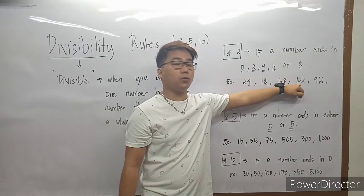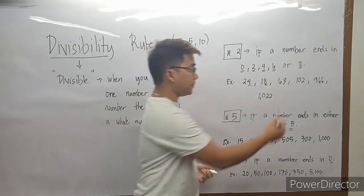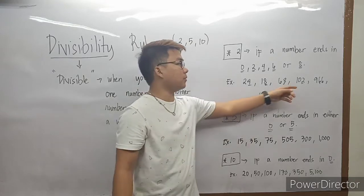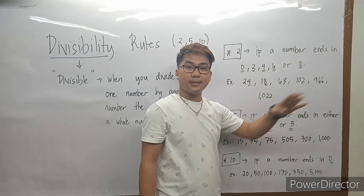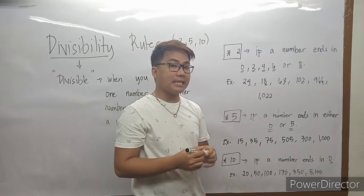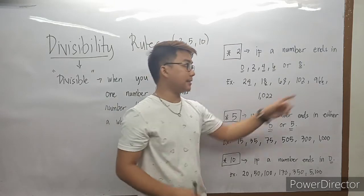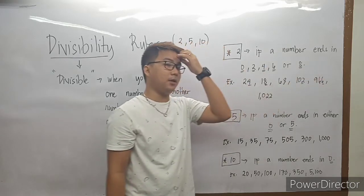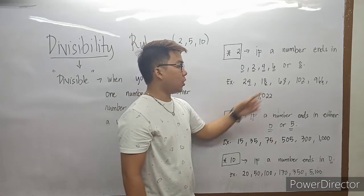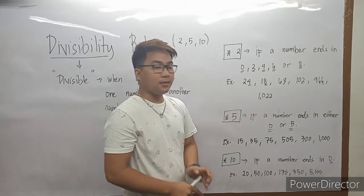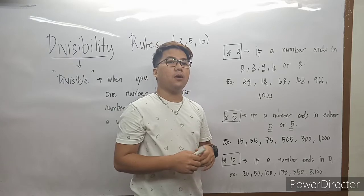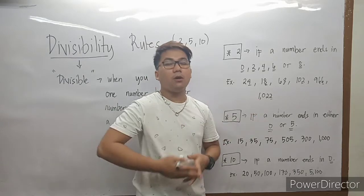Next, 102 — what is our last digit? Last digit is 2, so 102 is also divisible by 2. Very good. Next is 966 — ano yung last digit natin? 6. So, 966 divisible by 2? Yes, kasi yung last digit natin is 6, divisible by 2. Last one is 1,022 — ano yung last digit natin? 2. So yung 1,022 is also divisible by 2.